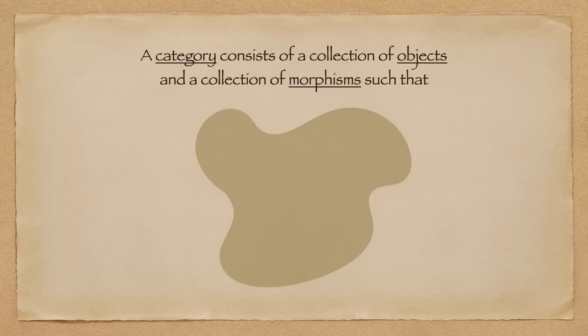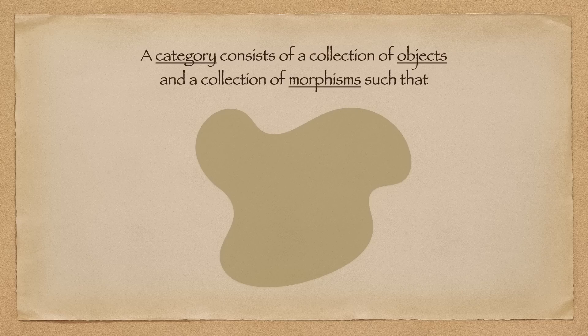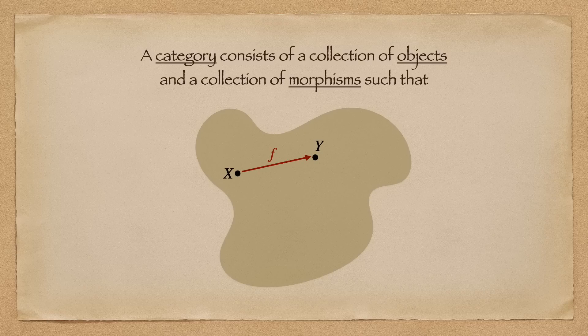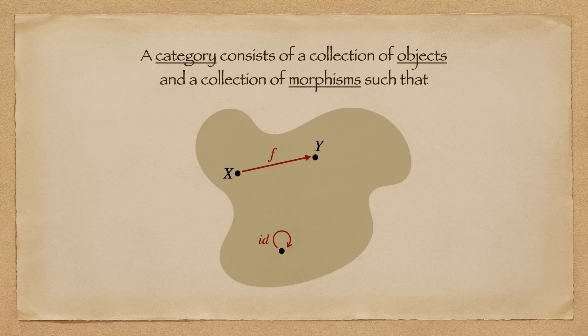More precisely speaking, a category consists of a collection of objects and a collection of morphisms, such that each morphism has a specified domain and a codomain. Each object has an identity morphism, and composition makes sense for morphisms.